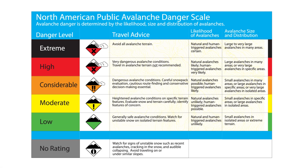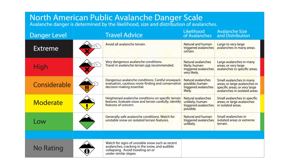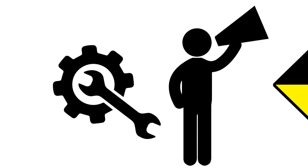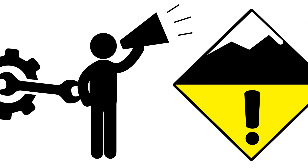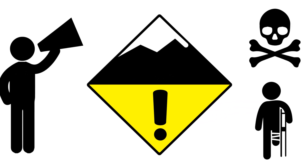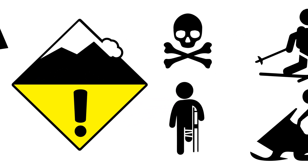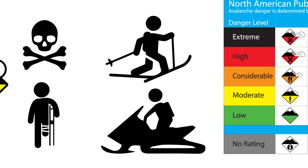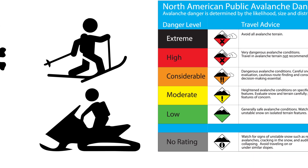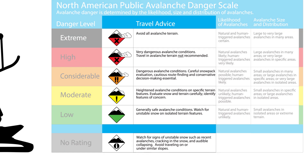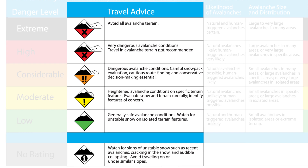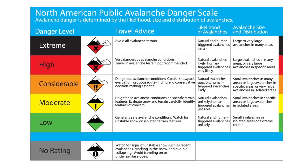The North American Avalanche Danger Scale is a tool used by avalanche forecasters to communicate the potential for avalanches to cause harm or injury to backcountry travelers. The scale consists of five ascending danger levels that focus on travel advice and provide an actionable starting place for your daily planning.